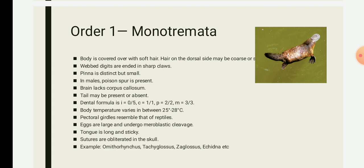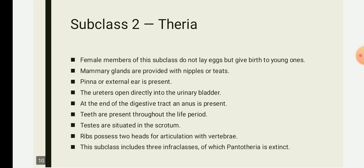Subclass two is Theria. 'Thera' means animal. They include modern viviparous, marsupial, and placental mammals. Both marsupial and placental mammals are included in Theria. They will have an ear with an external pinna. Mammary glands with nipples or teats will be present.